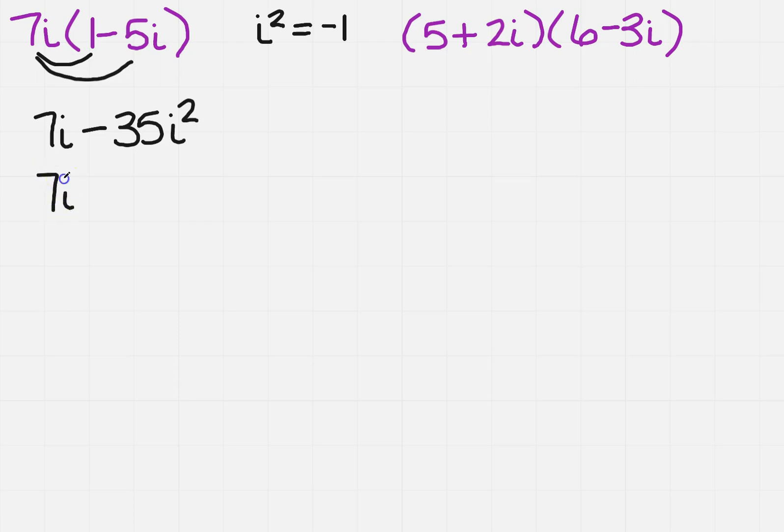So I'm going to substitute in now for i squared. I'm going to substitute in negative 1, and I'm going to get 7i plus 35.